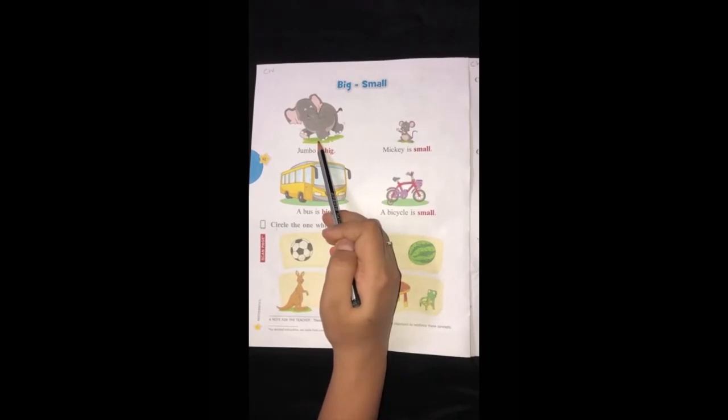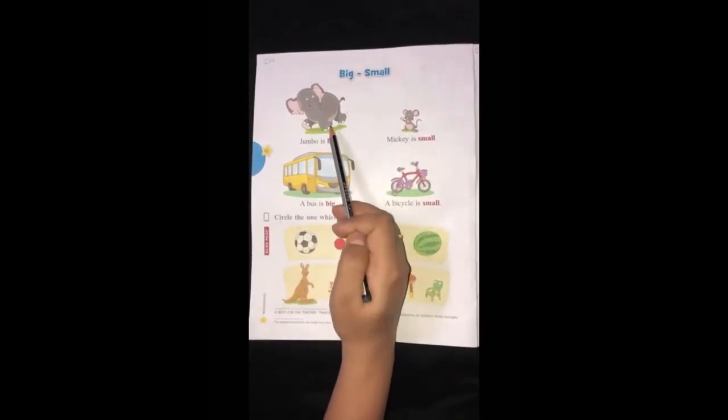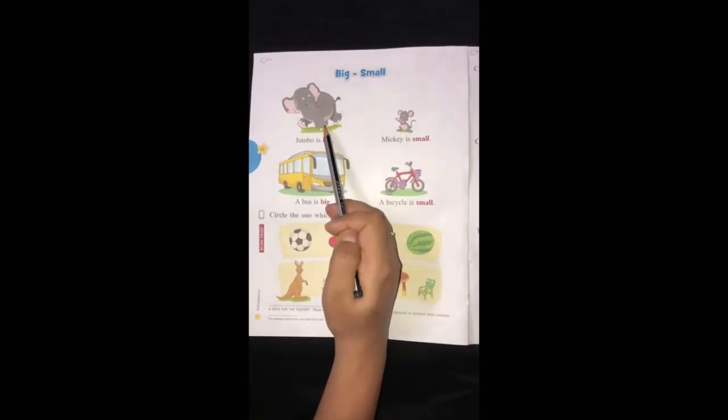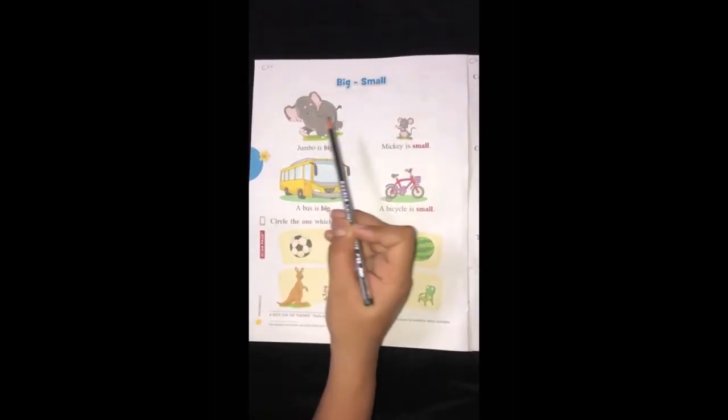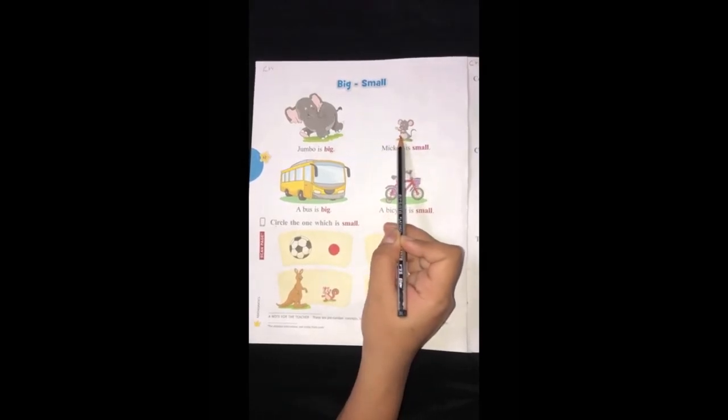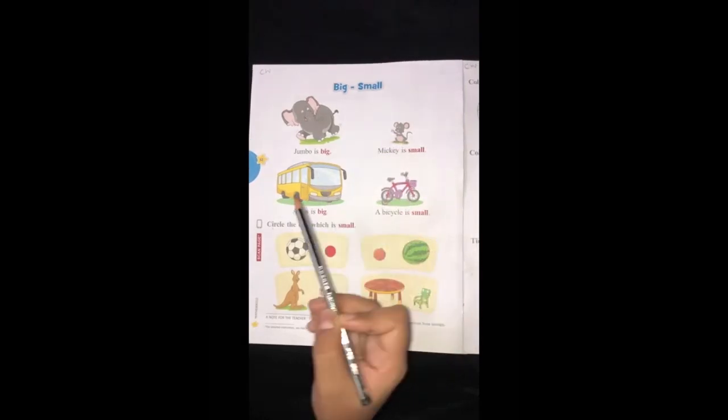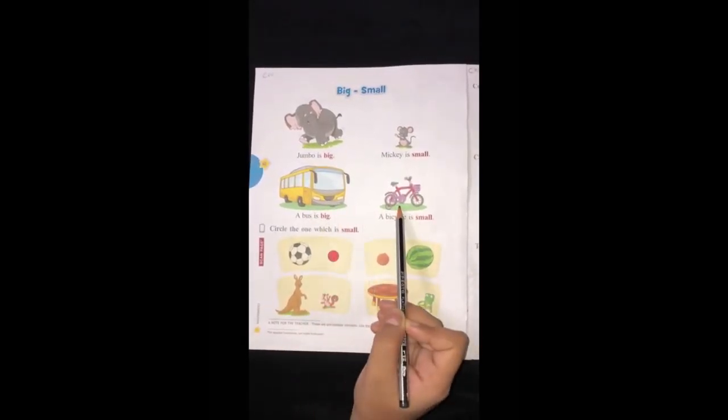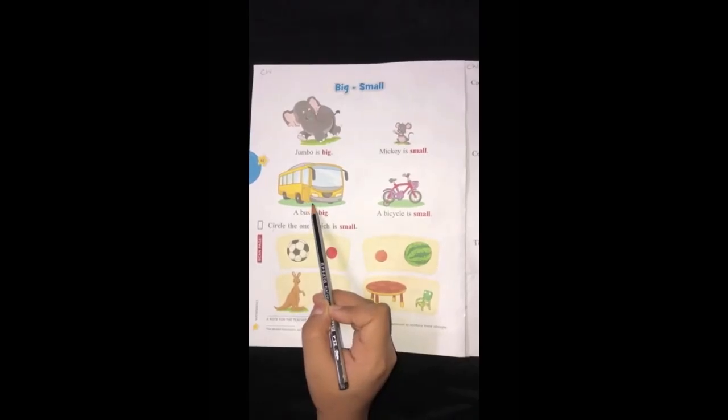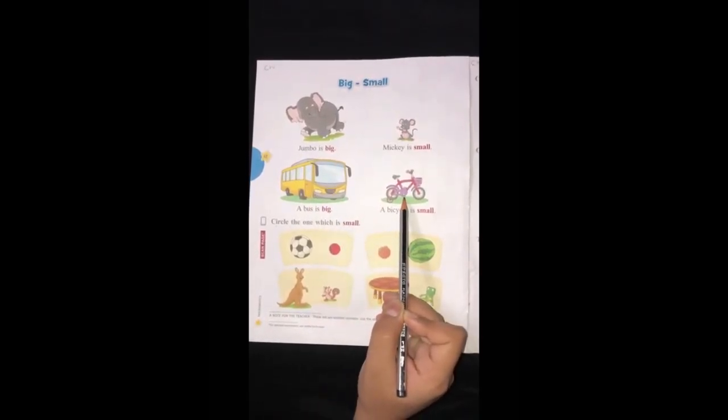Do they look the same? No. They are different. They are different in size. This is a big elephant and this is a small mouse. Let's look at the other picture. Wow! There is a bus and a bicycle. The bus is big and the bicycle is small.